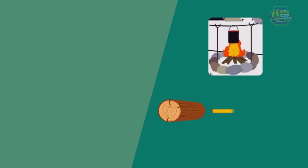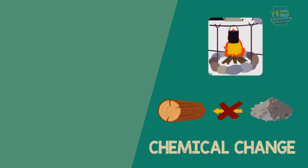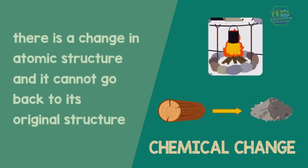When you are burning wood to cook, the wood turns into ashes, but you cannot turn ashes back into wood. This is an example of chemical change. In simple terms, there is a change in atomic structure and it cannot go back to its original structure.